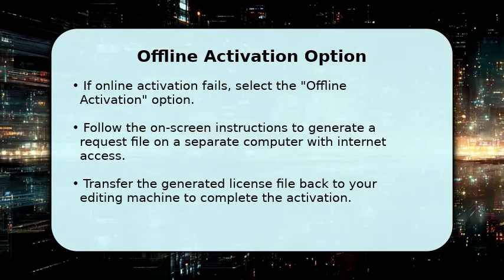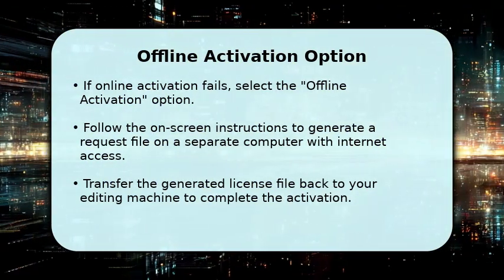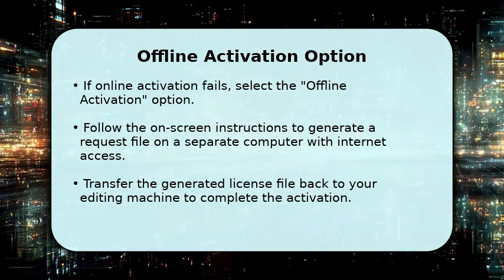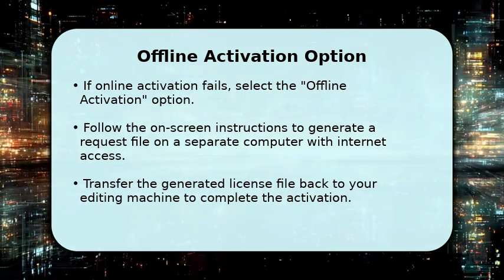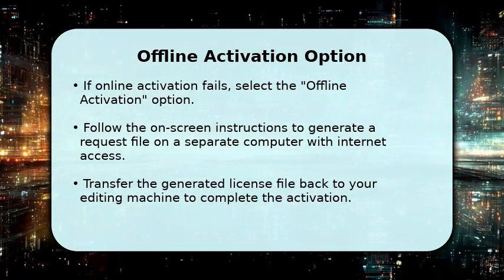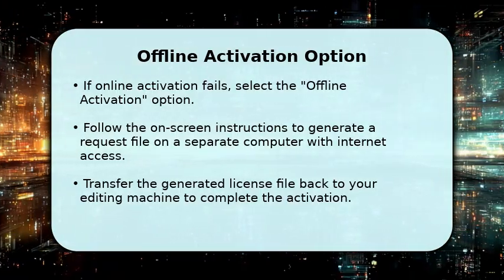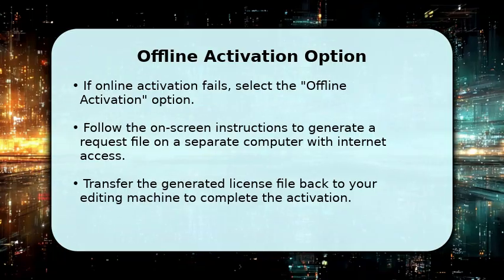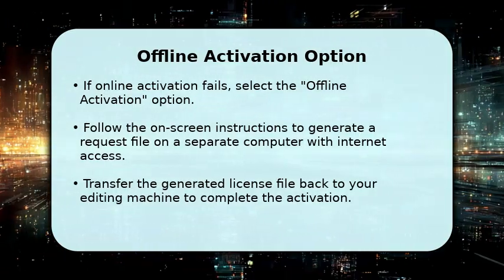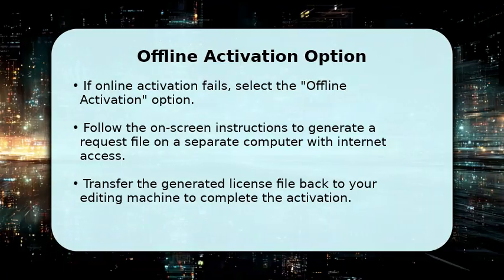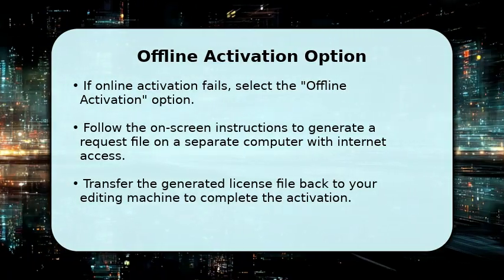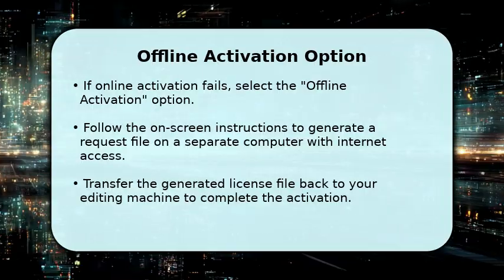Should you encounter issues with online activation, perhaps due to no internet on your editing machine, there's an offline activation option. Select this, and the software will guide you to generate a request file. You'll then transfer this file to another computer with internet, get a license file, and bring it back. This ensures everyone can activate their software, even in more isolated environments.